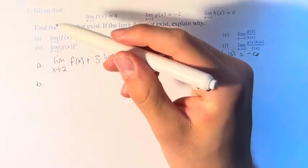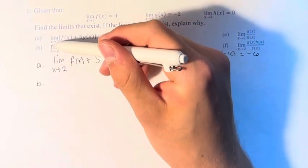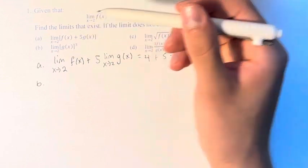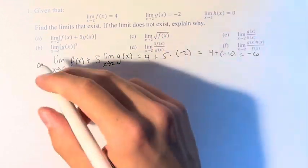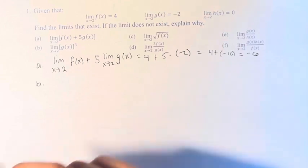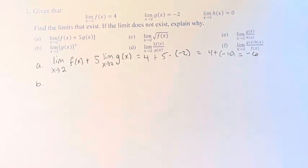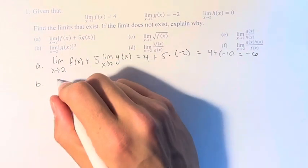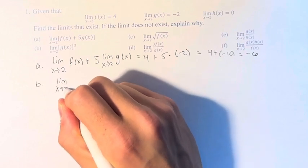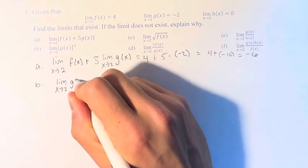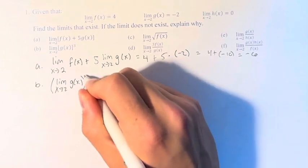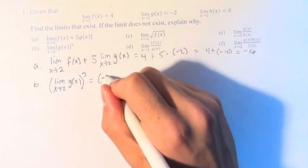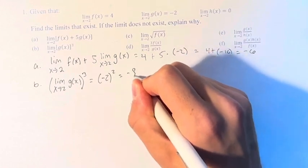In b, we have the limit as x approaches 2 of g of x cubed. So this is equal to the limit as x approaches 2 of g of x, altogether cubed. This is negative 2, so it's equal to negative 2 cubed, or negative 8.